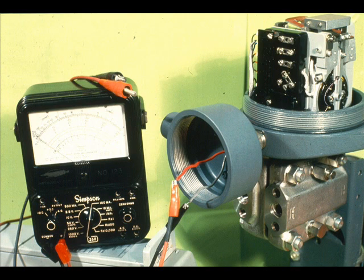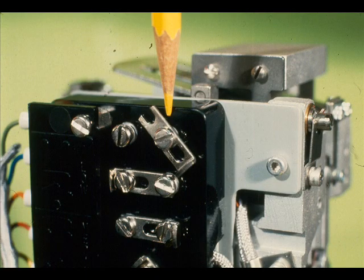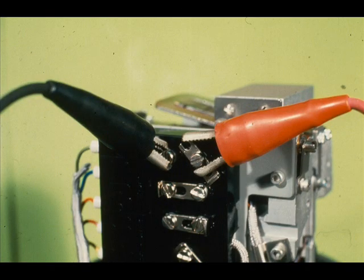Next, connect a milliamp meter into the output circuit. Disconnect the upper right link, isolating the number 2 terminal. Connect the positive of the milliamp meter to the number 2 terminal and the negative to the terminal from which the link was removed.